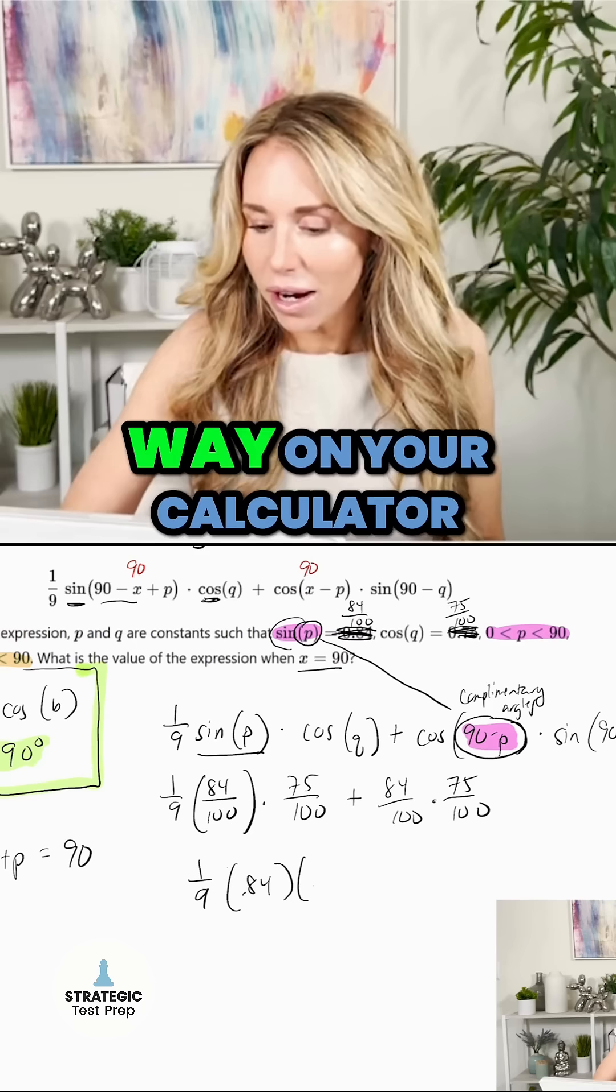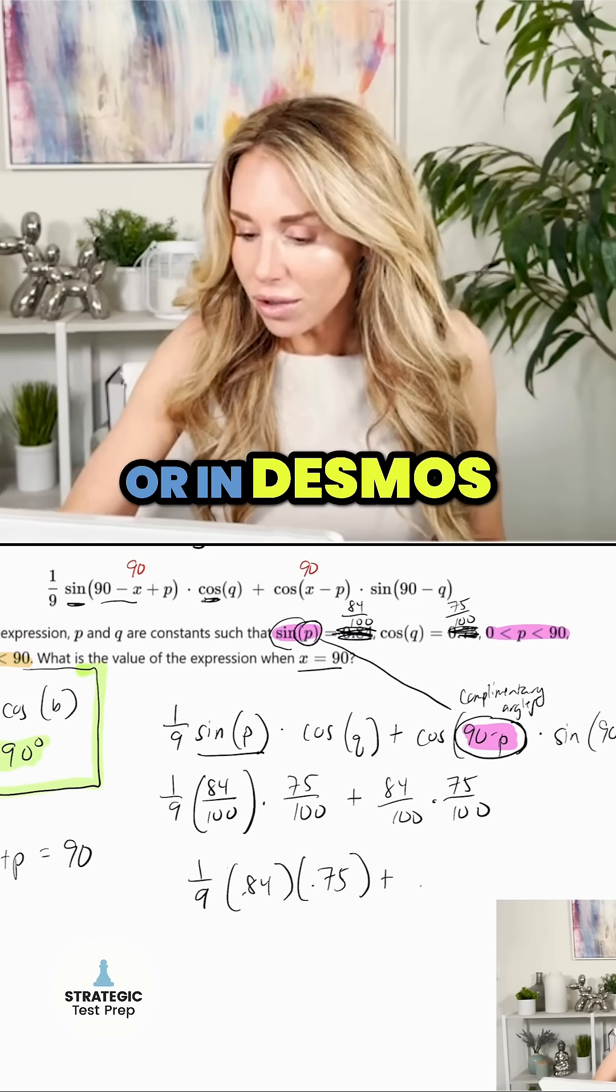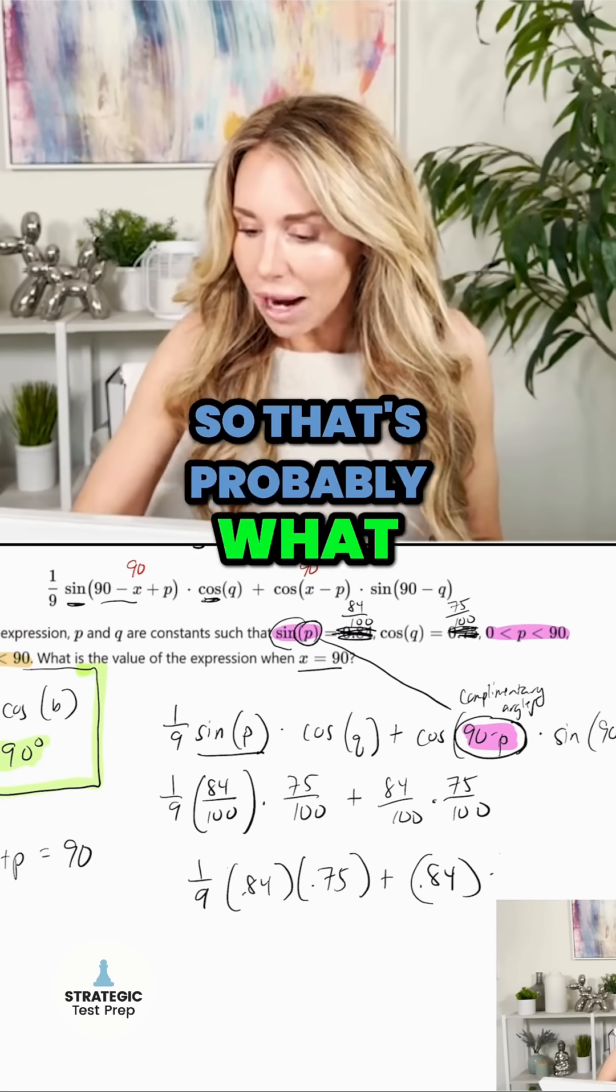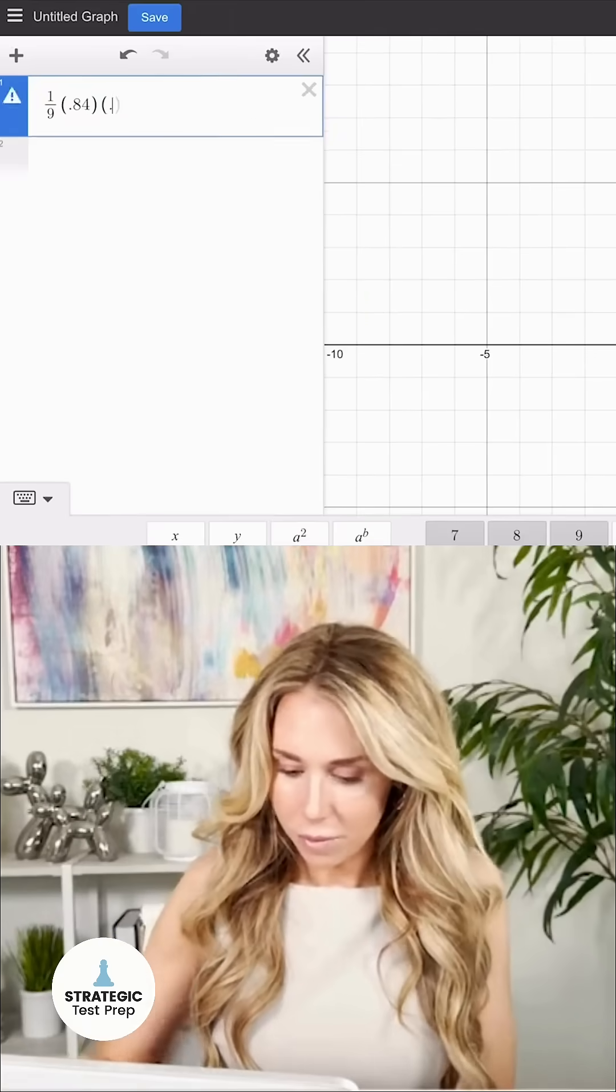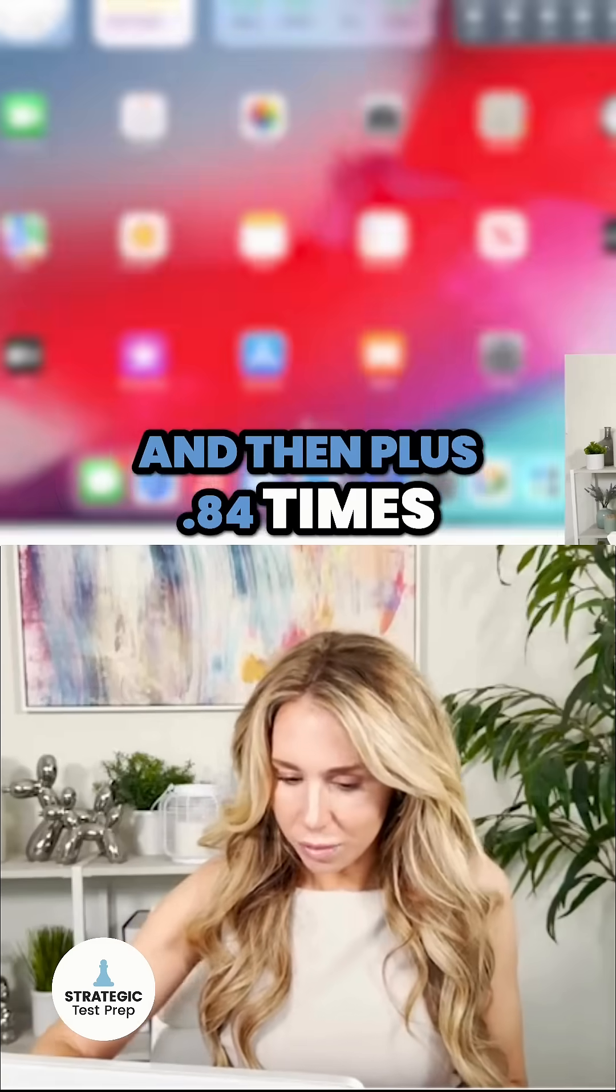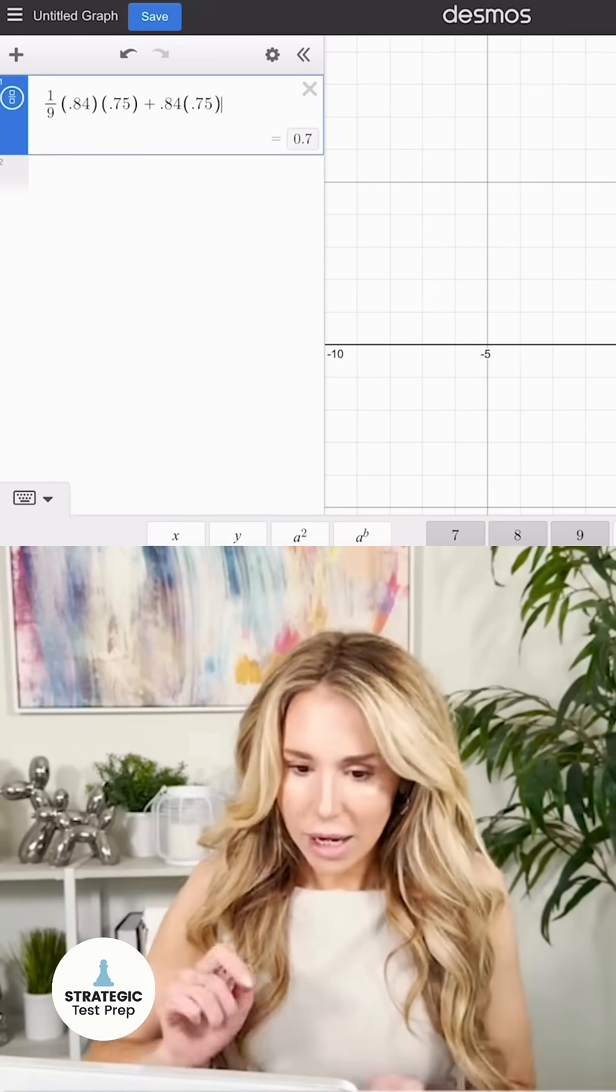That's probably easier to just do it this way on your calculator or in Desmos. So that's probably what I would do. I would just pop this right into Desmos. And then plus 0.84 times 0.75. And you get 0.7.